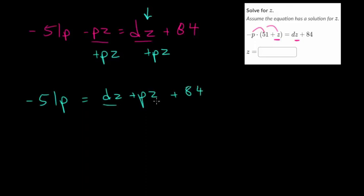So we got our z's together but now we got to get rid of this plus 84. So we got to move all non-x terms or non-z terms in this case to the other side. So subtract 84 to cancel out that addition. So you get minus 51p minus 84. Let me rewrite that. So minus 84 equals dz plus pz.